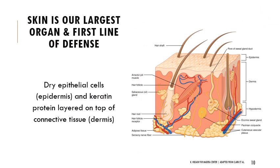Our skin is the most important first line of defense for preventing pathogens from getting in. It has layers of different cell types and tissues — dry cells constantly sloughing off, as well as keratin to keep things tough and contained. If we get cuts or lesions it's very likely infection will occur, and if we have burns where large portions of skin are damaged, there's high risk of pathogens entering the body.